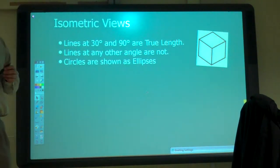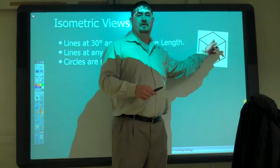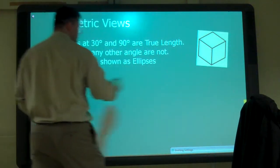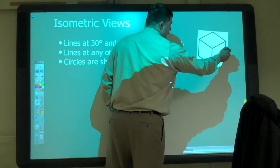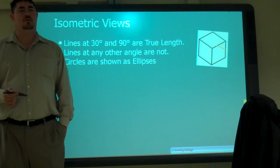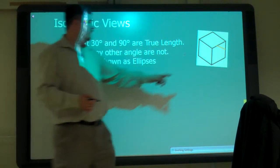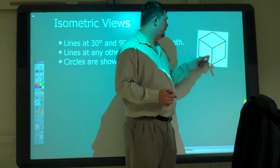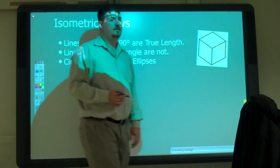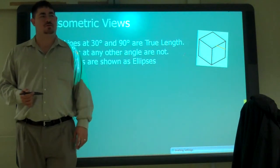Anything that's not on one of those angles, you can't measure. So if I had a line like that, I can't measure that. I'd have to find where this point is, find where that point is, and then connect them. Okay? Questions?